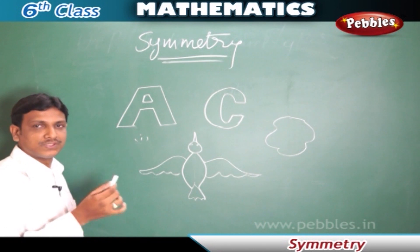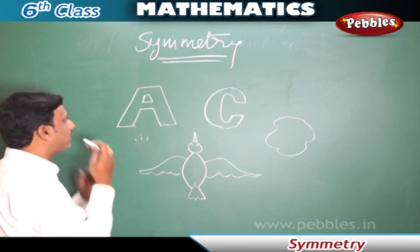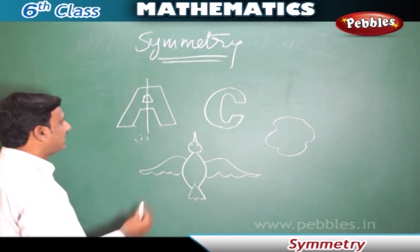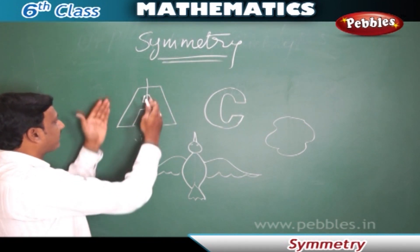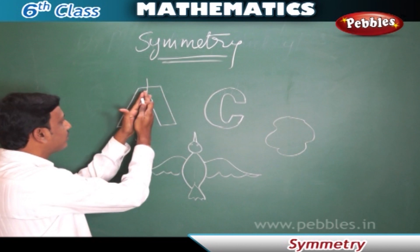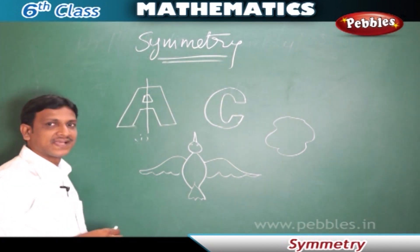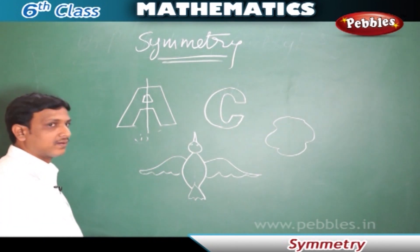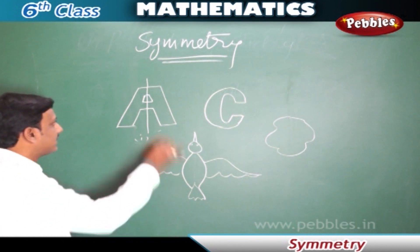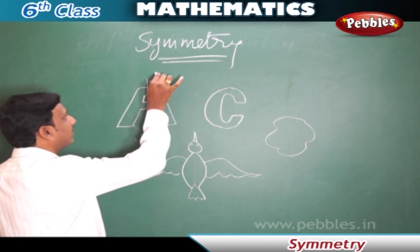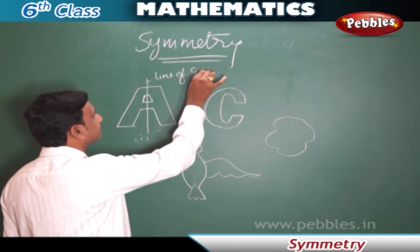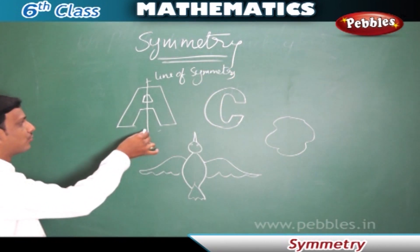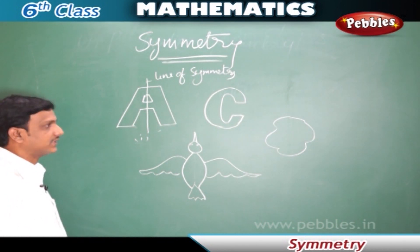Both the parts should coincide if it is folded. For example, if this figure is drawn on a paper and we close it, both the parts must match exactly — that means they should be identical. Then we can say that this figure has line symmetry, and the dividing line is called the line of symmetry. So this figure has got line symmetry.